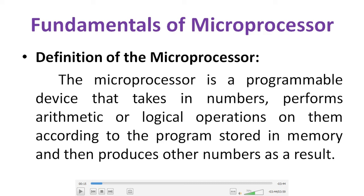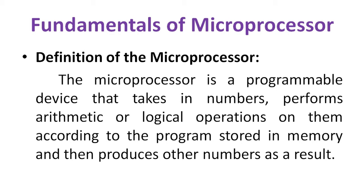For example, if you want to perform addition of two numbers, you feed those two numbers to the processor using some instruction. Once the processor understands what type of operation it has to perform, it performs the addition. This is a simple definition of the microprocessor.